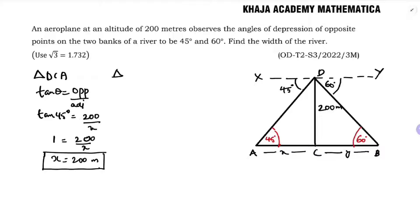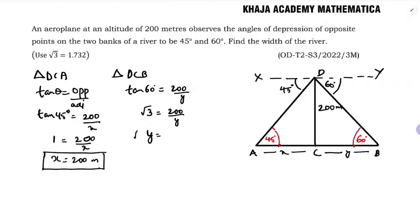Now we need to find y, so I'll take the other triangle DCB. Tan 60 equals 200 over y. Tan 60 is root 3, so root 3 equals 200 over y, giving y equals 200 over root 3. Rationalizing by multiplying by root 3 over root 3, we get y equals 200 root 3 over 3.